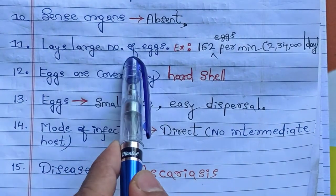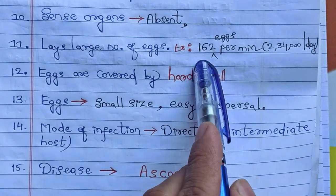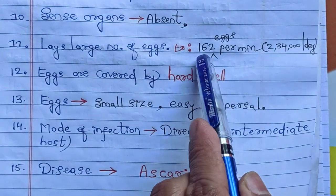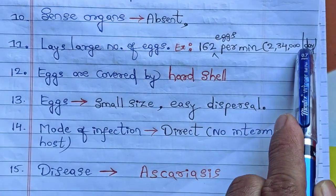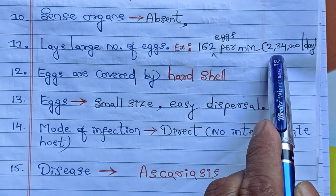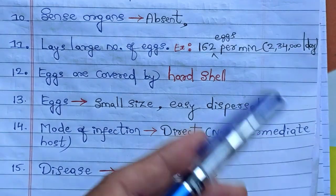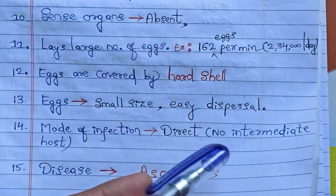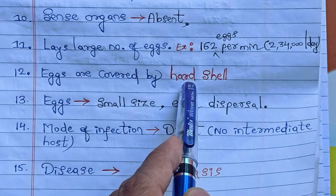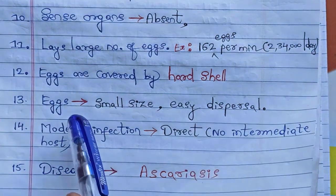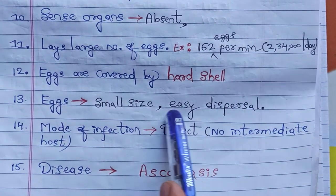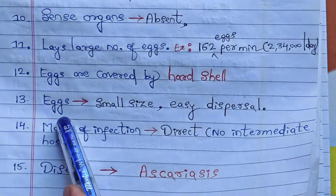Female Ascaris produces a very large number of eggs — 162 eggs per minute, which amounts to 234,000 eggs per day. The eggs are covered by a hard shell for protection. They are also very small in size, which helps in their easier dispersal to different places.